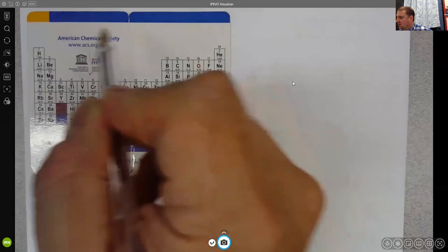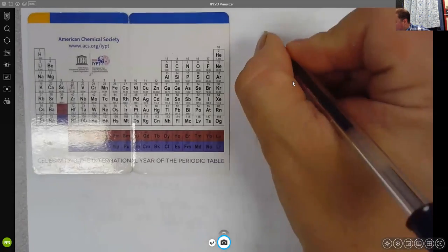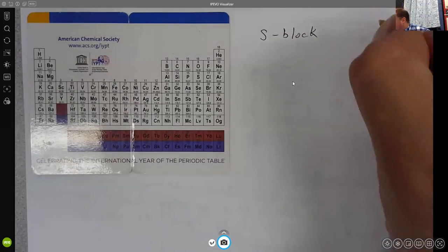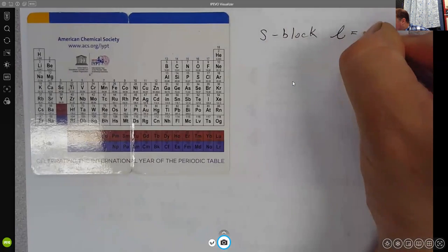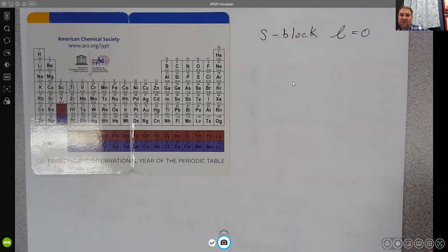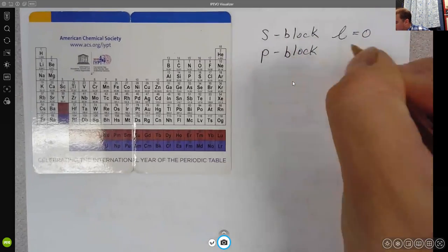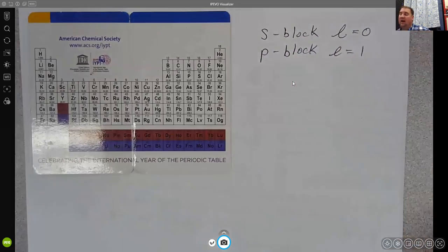So we look at the periodic table, we see that there is the S block, and the L for those electrons filling in the S block would be a 0. We see the P block and the L for those elements, those electrons filling in there would be a 1.